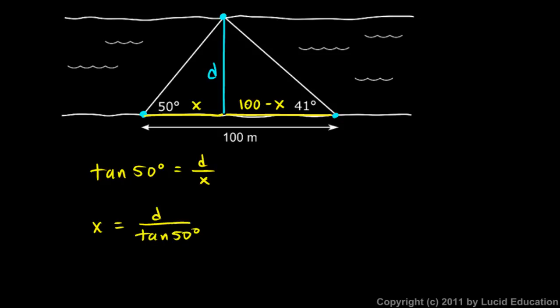D over the tangent of 50. I can do this on the calculator. One over the tangent of 50 is .8391. So x is .8391D.